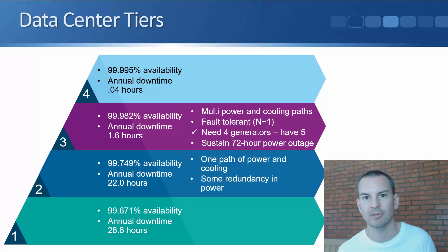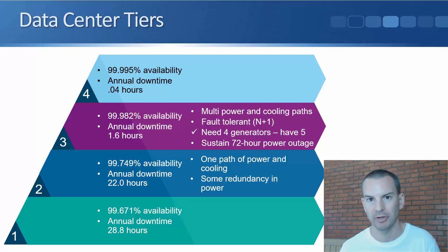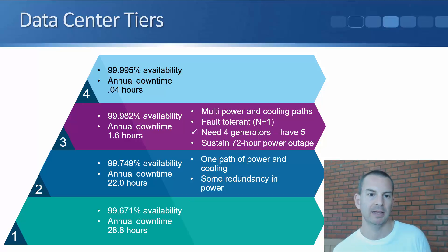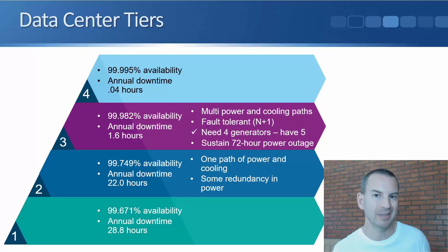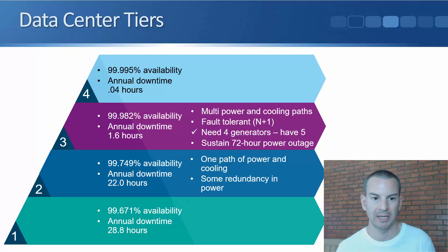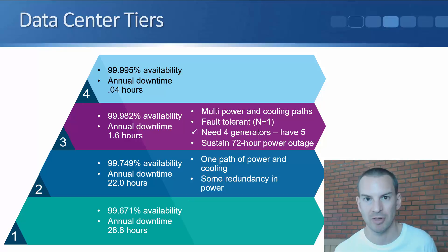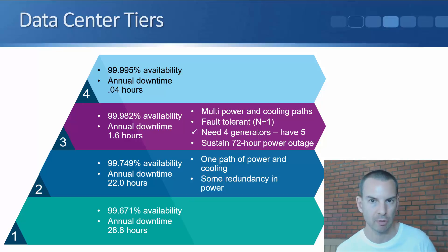With tier three, the power must be able to sustain a 72-hour power outage from the grid using backup generators. The highest level, a tier four data center, has an annual downtime of just 0.4 hours. Obviously the higher the tier, the more expensive it is to build that facility, and building a highly available facility yourself represents a huge upfront capital expenditure cost.